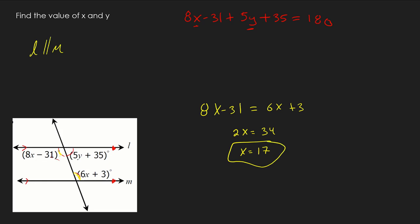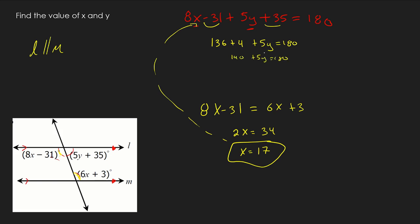Once we know x is 17, we substitute it in. 8 times 17 is 136; minus 31 plus 35 simplifies to plus 4; so 136 plus 4 plus 5y equals 180, meaning 140 plus 5y equals 180. Subtracting 140 gives 5y equals 40, so y equals 8.